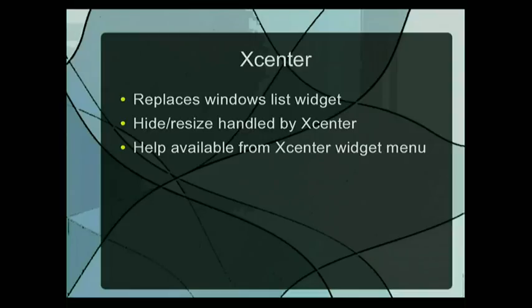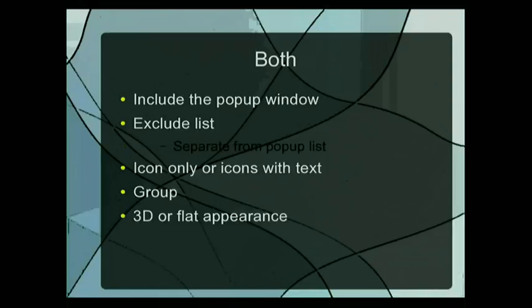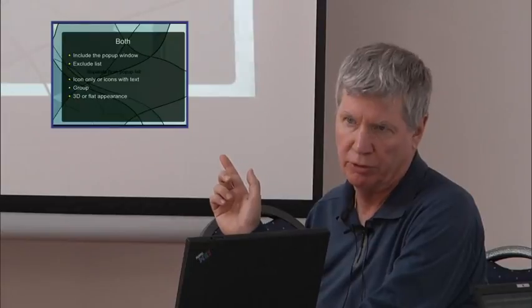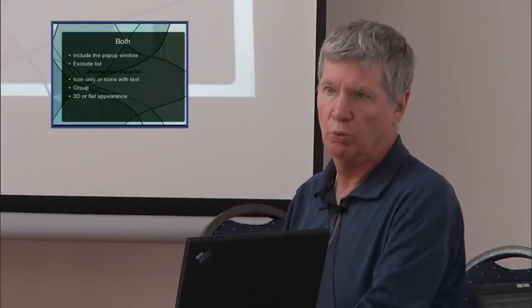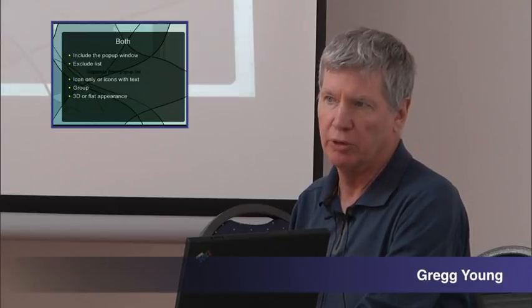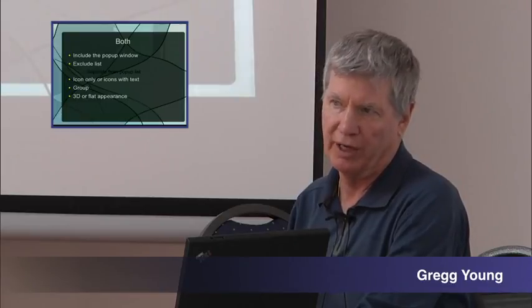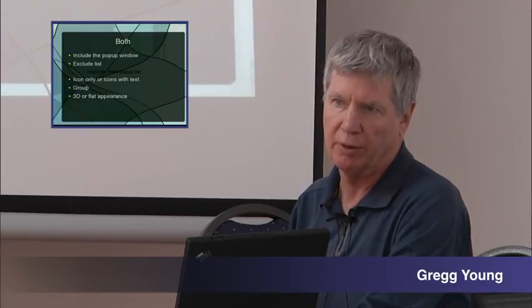It's a decent replacement for the Windows list. The only thing it lacks is Tile and Cascade. There's an exclude list for the pop-up and a separate exclude list for the taskbar, so you can have different things available in different windows. You might exclude items from the pop-up so you don't have to scroll through as many entries.